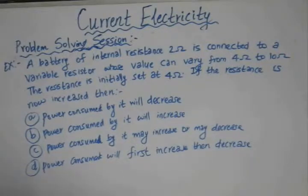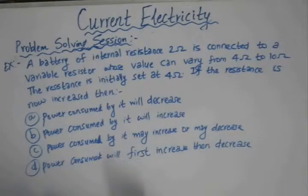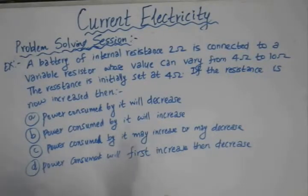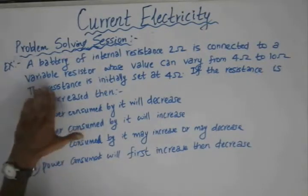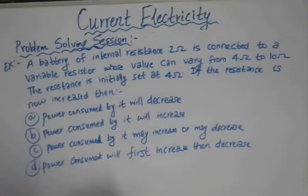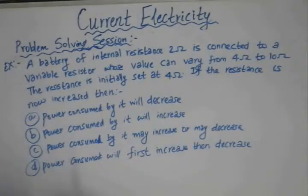In this problem, this is actually a problem based on internal resistance or the maximum power that could be transferred to the external resistance R. This concept we have already seen in our previous lectures. Now in this question, we have been given a battery of internal resistance 2 ohm is connected to a variable resistor whose value can vary from 4 ohm to 10 ohm.